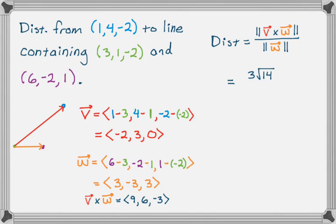So the magnitude of V cross W worked out to 3√14. And then I'm going to divide by the magnitude of W, which turned out to just be 3√3. The 3s obviously cancel. And I get √14 over √3. You might rationalize that, whatever.